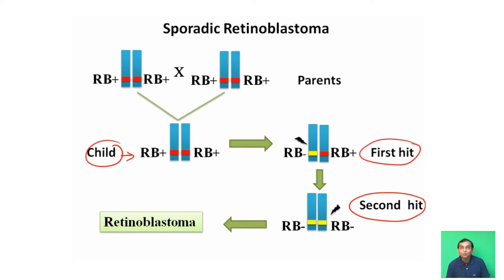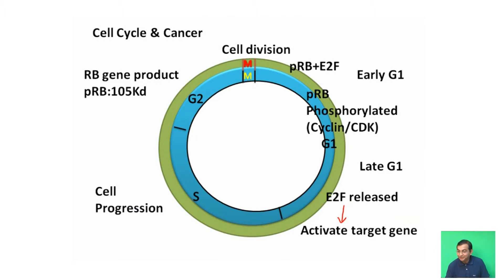This is one of the most important hypotheses proving that more than one hit — that is, multiple mutations — is required for the development of cancer. The RB gene also acts as a tumor suppressor gene and plays an important role in the control of the cell cycle. Here we show how the RB gene regulates the cell cycle.